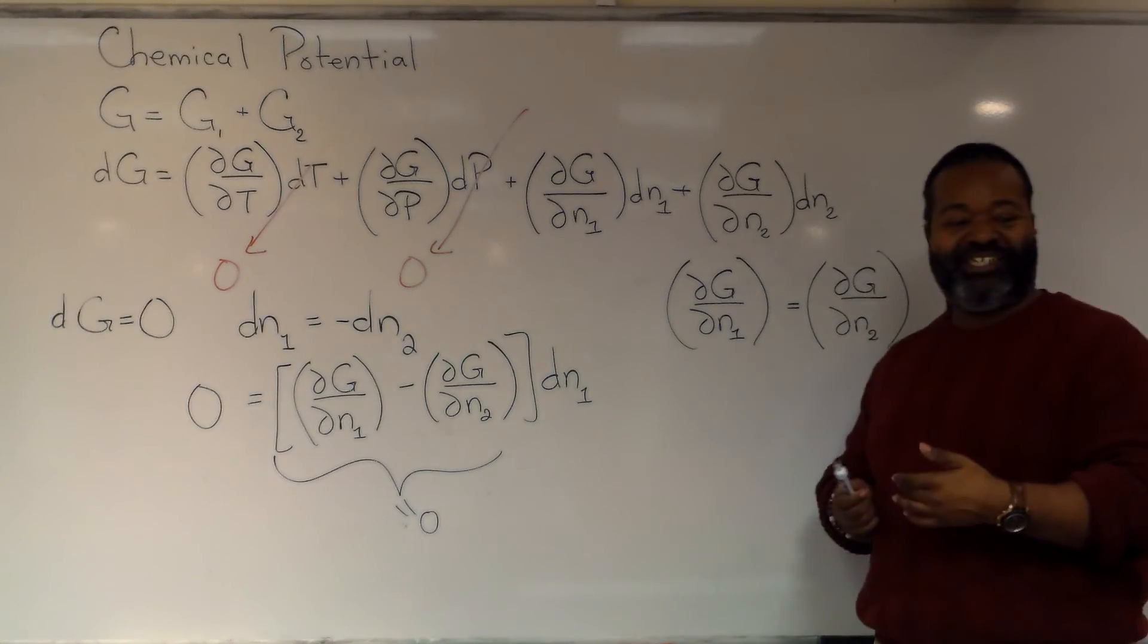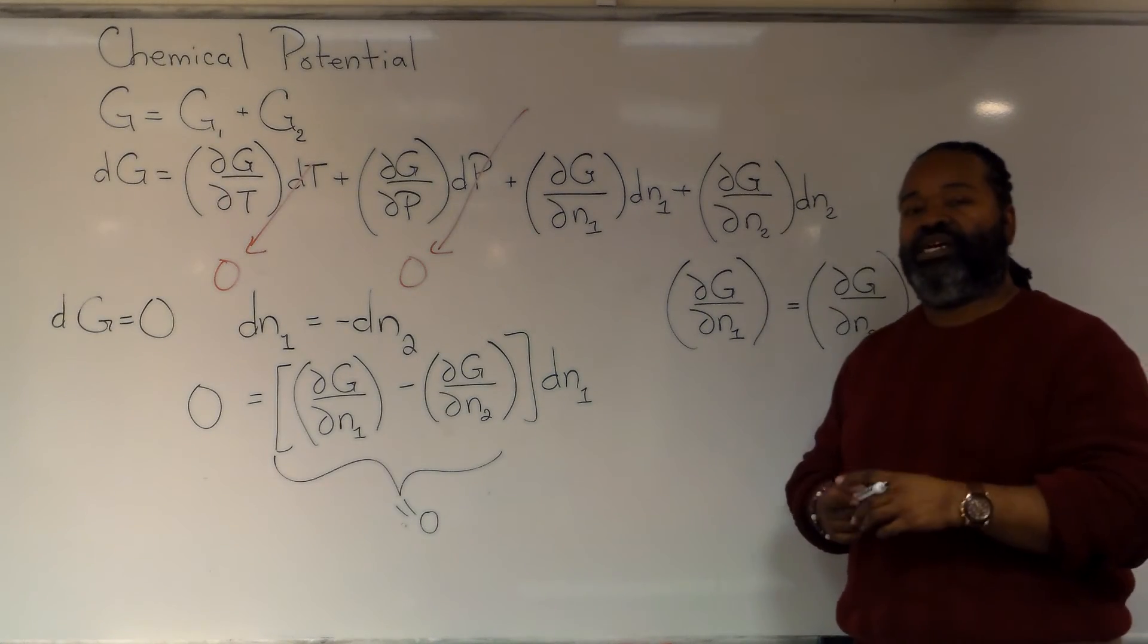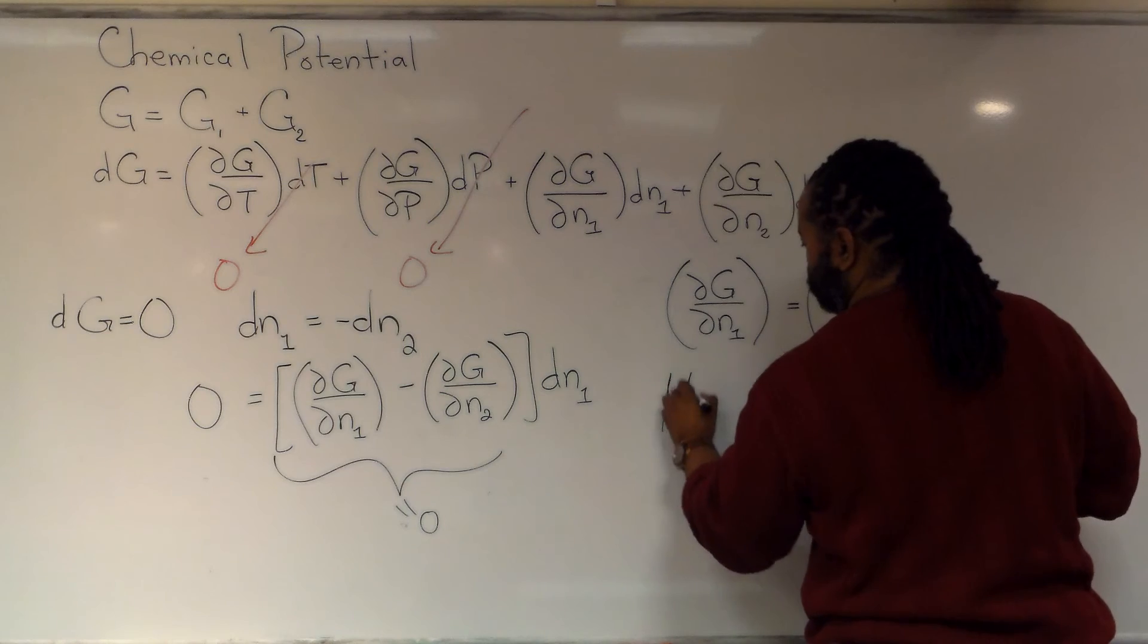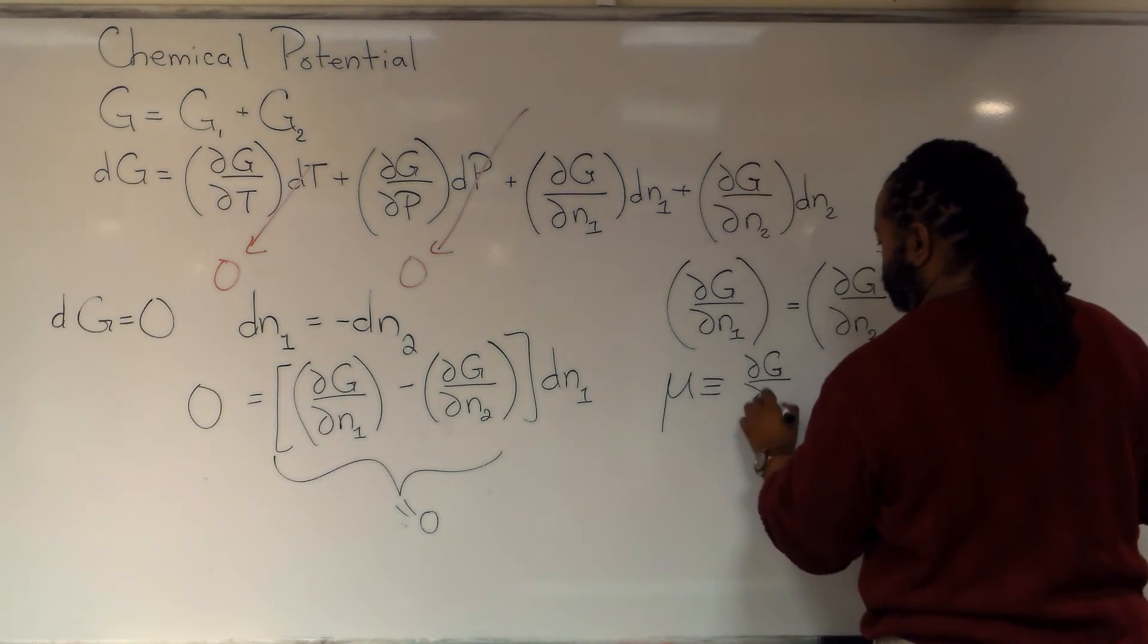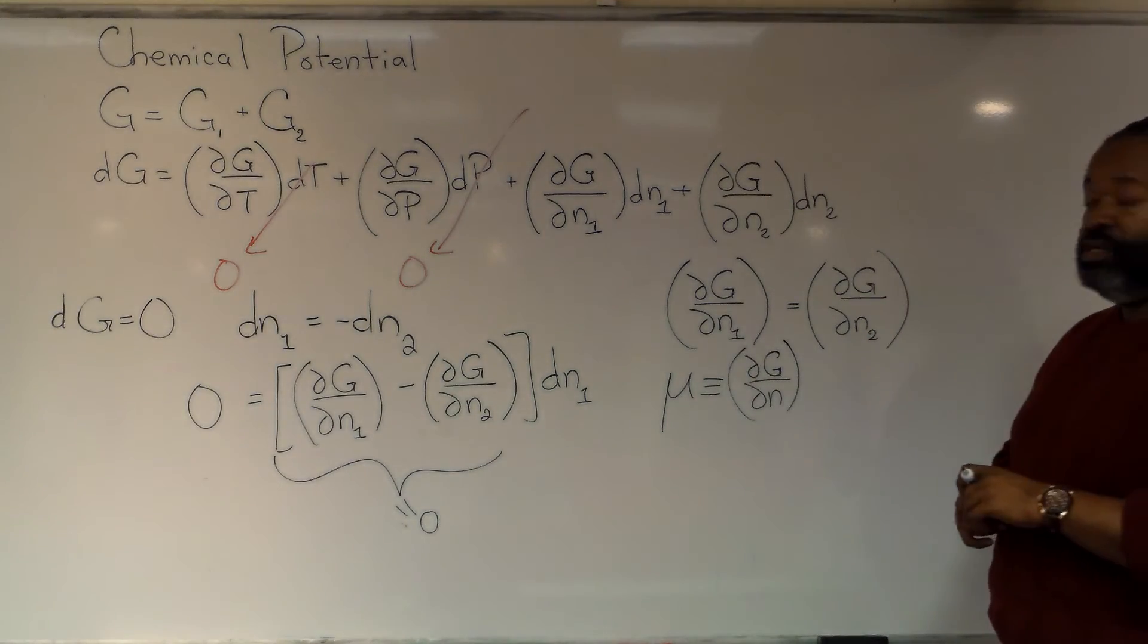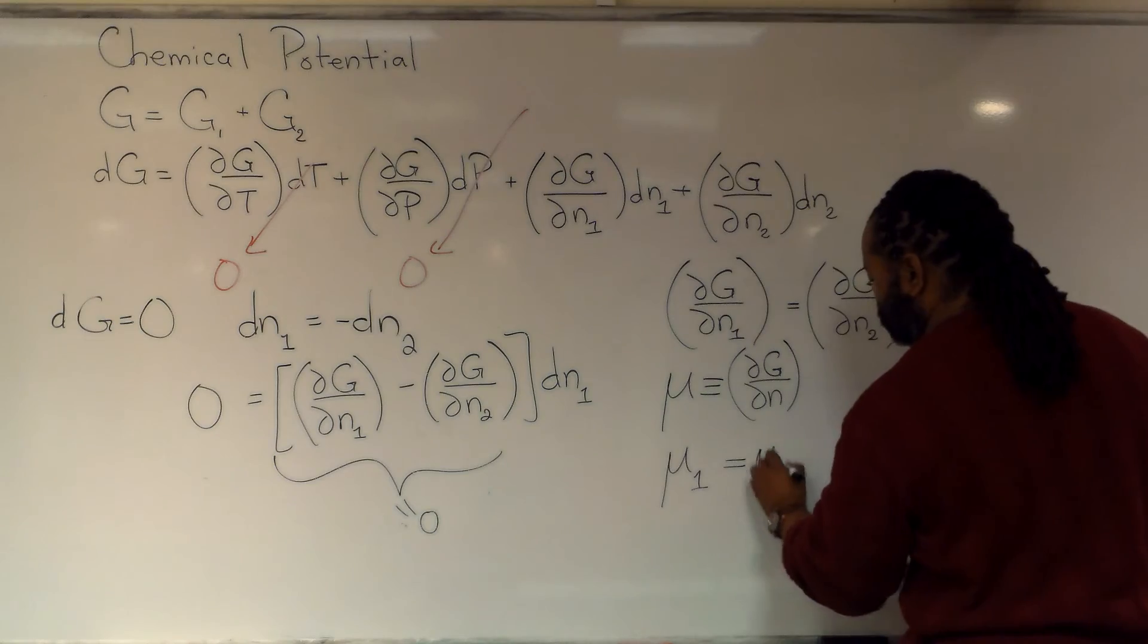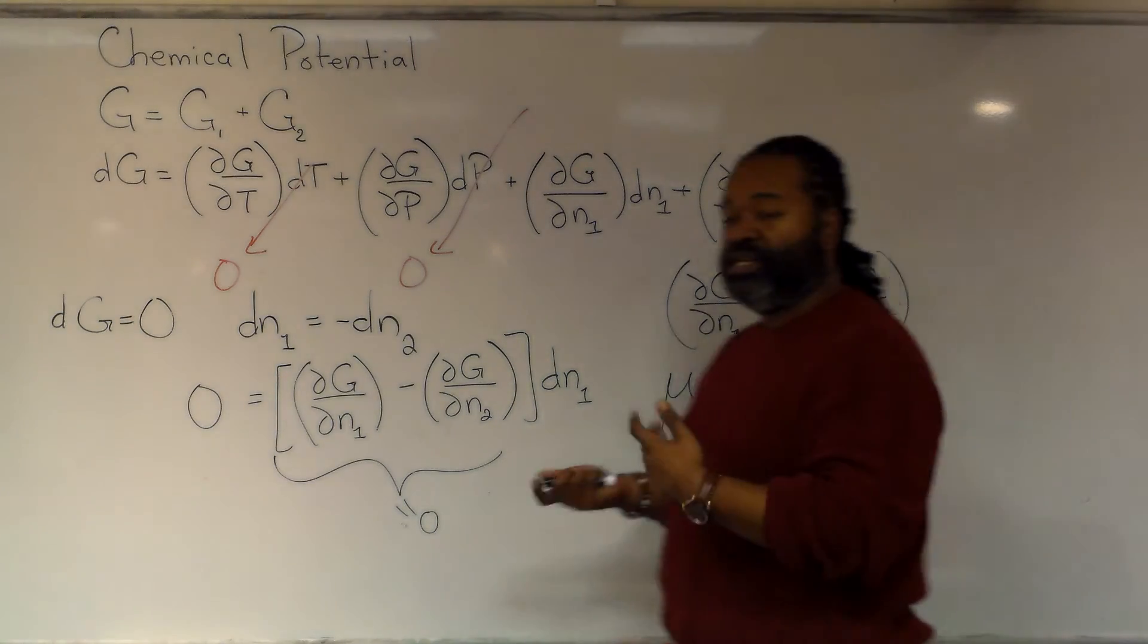And because the idea of changing numbers of moles is such a big idea in chemistry, we actually define a new quantity here, the chemical potential. So the chemical potential then is defined as that change in the Gibbs with respect to the number of moles. And as a result, we have the following that chemical potential for phase one has to equal chemical potential for phase two when we're sitting at equilibrium.